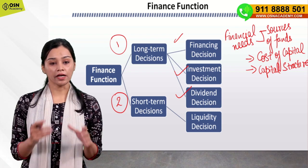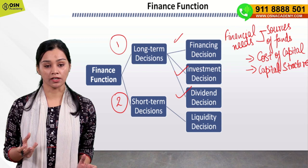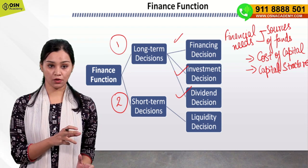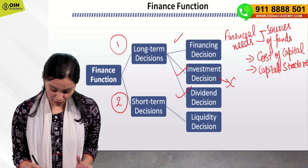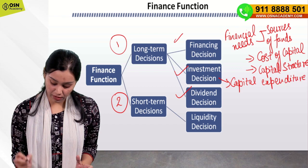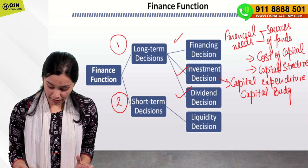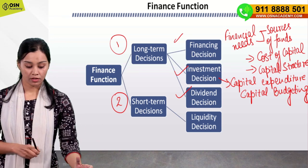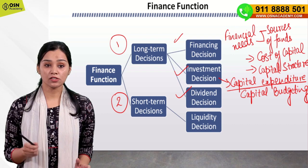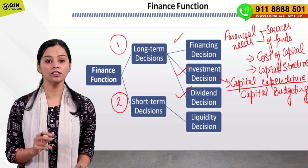Next is investment decision. Once funds are available with the company, how will they be invested or utilized? That is seen in the form of capital expenditure — how will the company's capital expenditure happen? In investment decision, we discuss the capital expenditure of a company, which is determined using capital budgeting techniques, which we will discuss in detail in further lectures.